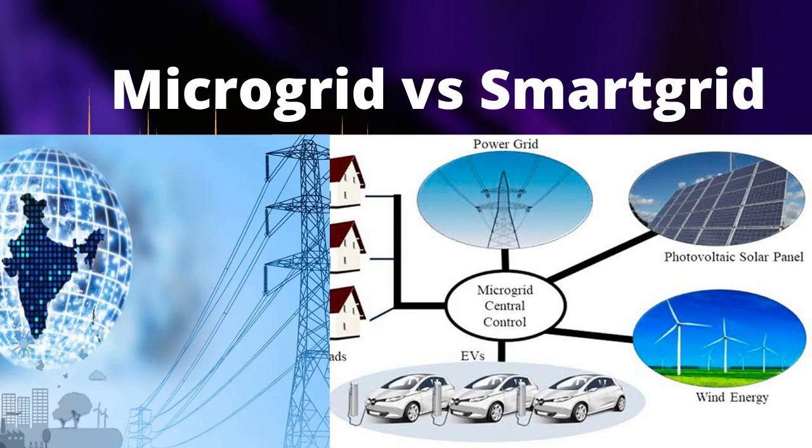Scale. Microgrid: microgrids are relatively small and serve a specific geographic area, community, or facility. They can operate independently or be connected to the main grid. Smart Grid: the smart grid is a comprehensive system that covers an entire region, country, or even a continent. It aims to enhance the overall grid infrastructure.